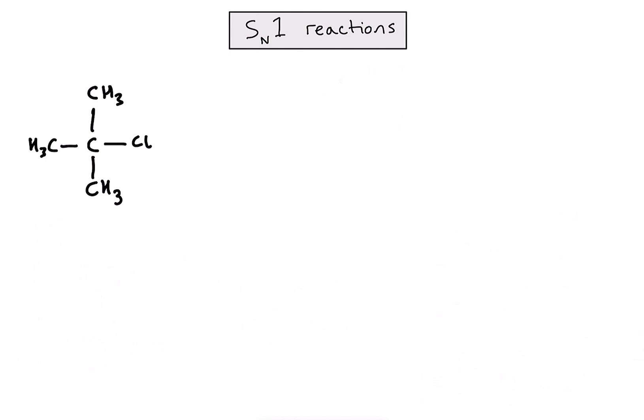It's important to know that SN1 reaction mechanisms are favored by tertiary haloalkanes. What makes it tertiary? If I look at the carbon bonded to my halogen, it is surrounded by three other carbons, which makes it tertiary, and that's going to be important for a step in a moment. So what's the first part of the process? I've got one molecule, and what we find happening is that it undergoes some bond breaking.